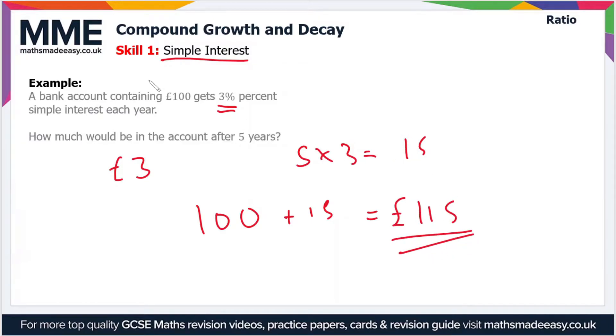So £100 plus 15 is £115. That's how much would be in the account after 5 years if we're dealing with simple interest. In reality, this is never the case and what actually happens is you get interest on top of your interest. So in compound growth you'd get 3% after the first year, that would give you £103, and then you take 3% of 103 and add that on.